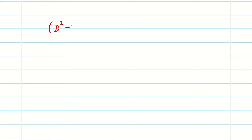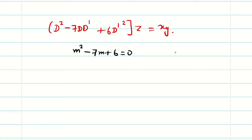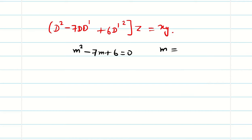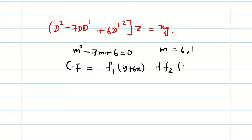There are problems which cannot be written in the above form. For example, I will take d square minus 7 d d dash plus 6 d dash square of z equals x y. In this case, I cannot write it as some (a plus b) whole square. So we have to proceed as usual. Time is a concern, so I am directly writing the CF — but you have to write every step. If you don't know, watch the videos on type one or how to find the complementary function from the Transforms and Boundary Value Problem playlist. So m equals 6 and 1, and my CF is f1(y plus 6x) plus f2(y plus x).